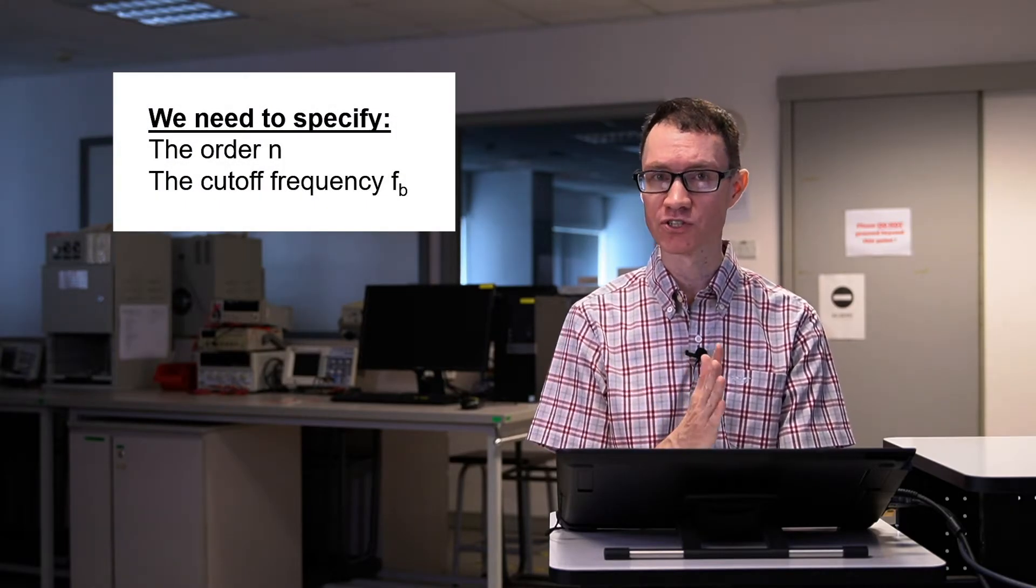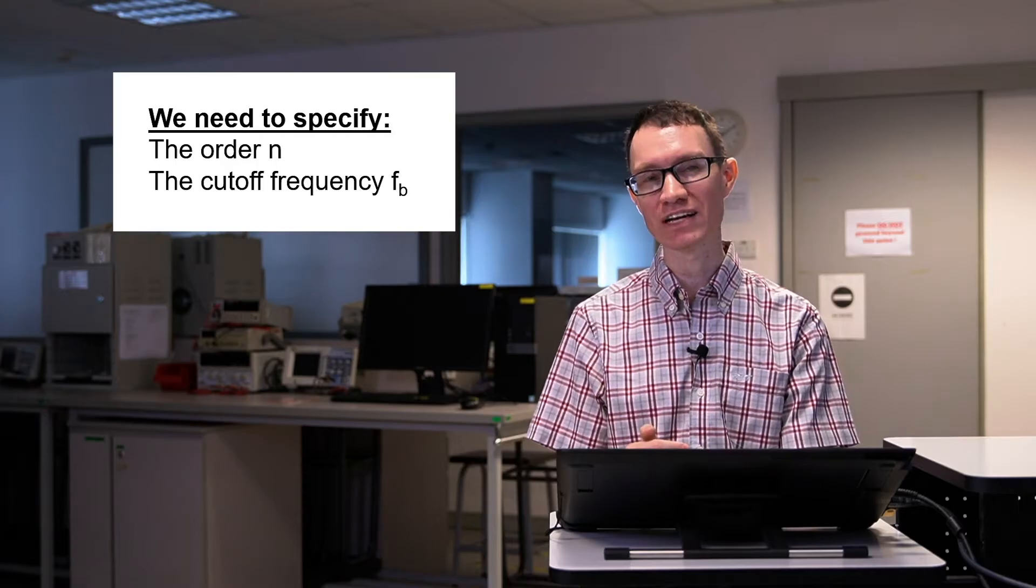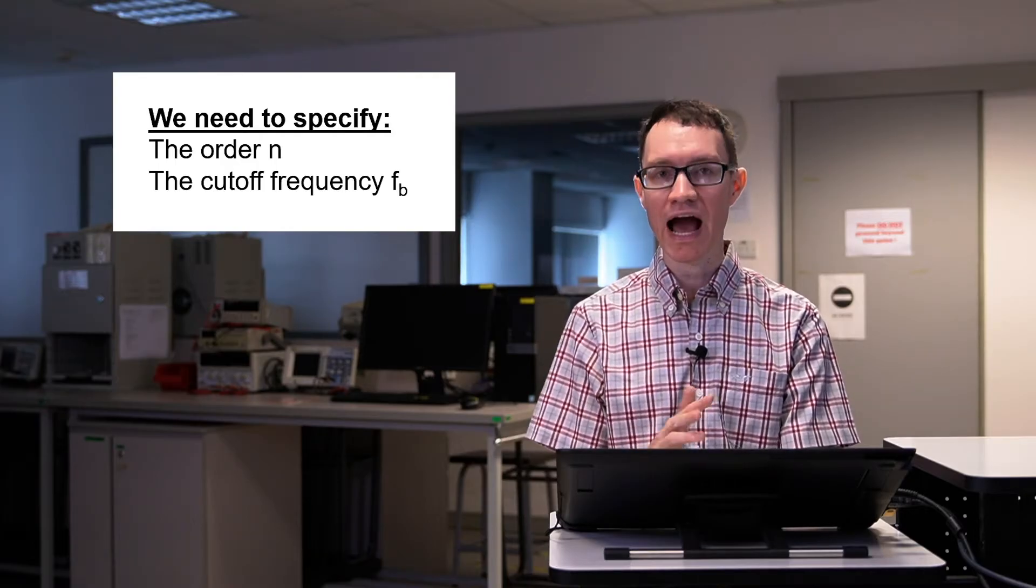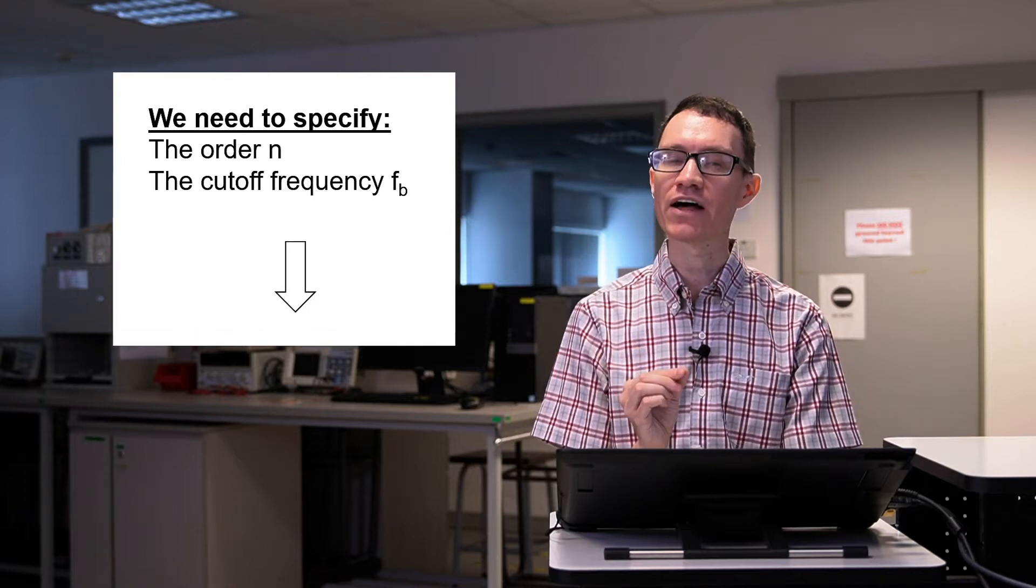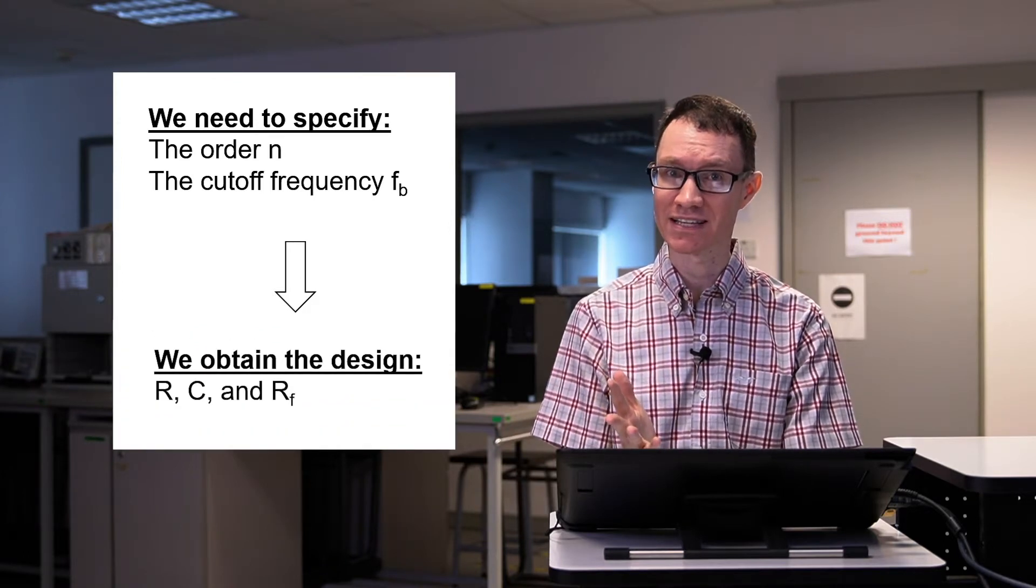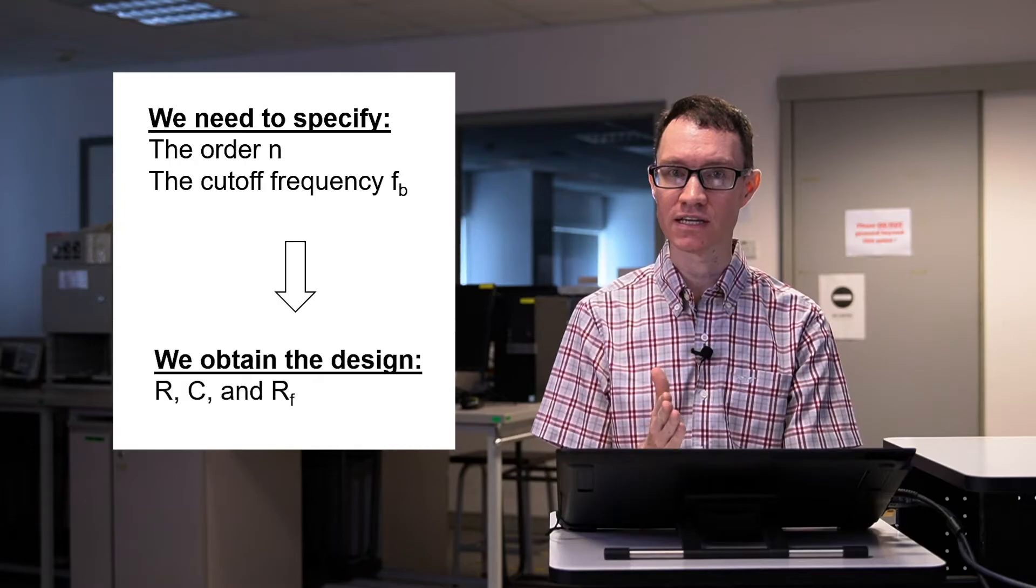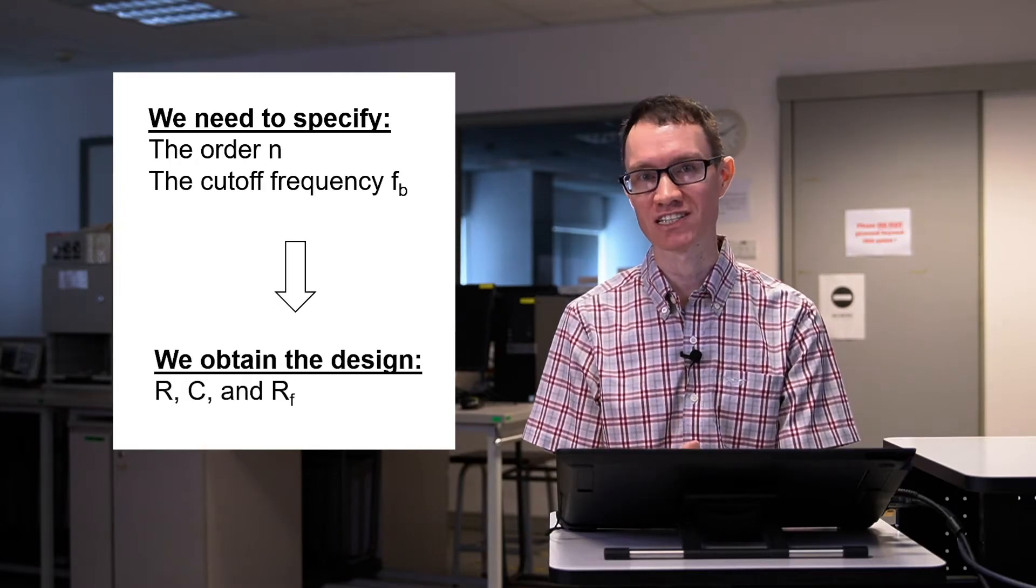We need to specify the order of the filter n and the cutoff frequency F sub B. After applying the design procedure, we should obtain the values of the circuit components inside the Sallen-Key circuit: R, C, and the feedback resistor R sub F.